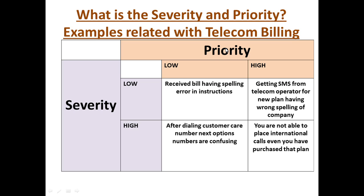Priority mainly focuses on customer requirements. The different types of priority are: low priority, where there is an issue but it is not that important; medium priority, where there is an issue in functionality not as per expectations — for example, on a payment gateway there must be an option for selecting credit card, debit card, or UPI, but something different is shown; and high priority, which majorly affects the functionality of the software.